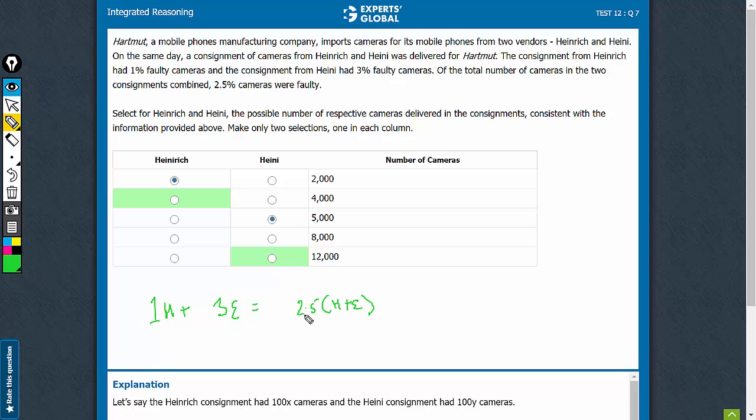This will give you a relationship between H and E, a ratio of sorts. 2.5 minus 1 comes here, this becomes 1.5H. This is equal to 3E minus 2.5E, which becomes 0.5E. So 0.5E is equal to 1.5H.